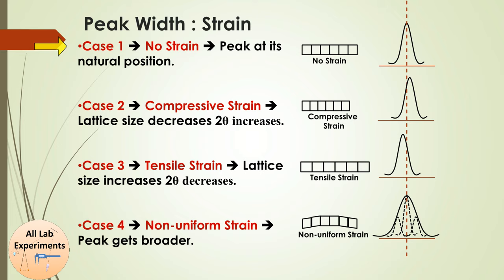For lattice strain: in case 1, no strain is applied. If we compress the crystal, the interplanar spacing d decreases, and according to Bragg's law sinθ increases, so the XRD peak shifts toward higher 2θ values. In tensile strain, when we stretch the lattice, the interplanar distances increase and θ decreases. In case 4, if strain is non-uniform — compressive in some places and tensile in others — the peaks get broadened and the FWHM increases.